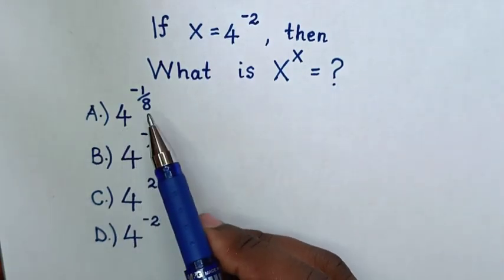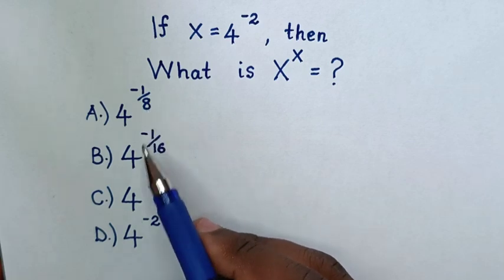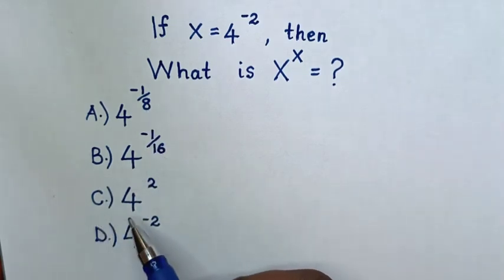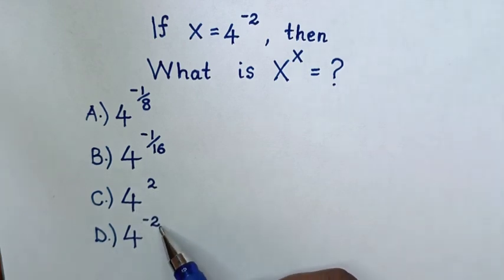Select between the answer A, 4 power of negative 1 over 8, B, 4 power of negative 1 over 16, C, 4 power of 2, D, 4 power of negative 2.